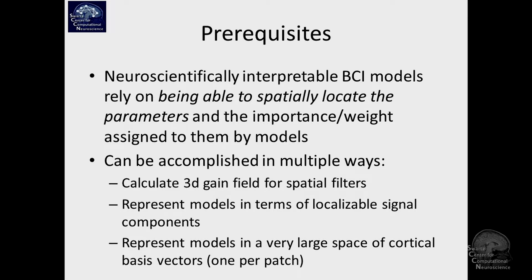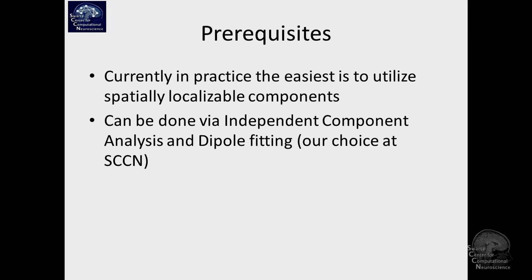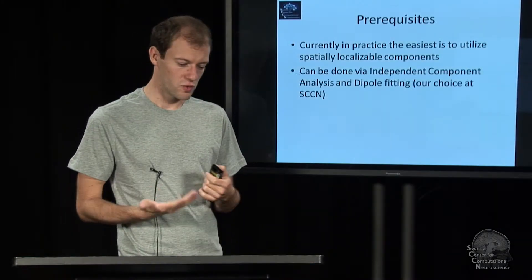One of these avenues is Independent Component Analysis that I talked about a little bit. The last option is to represent models in a space of localized basis vectors—don't restrict yourself to a small number of components but instead cover the entire brain with patches of possible sources, then find out which patches are being occupied by your model. That is not necessarily the easiest one to get to work.